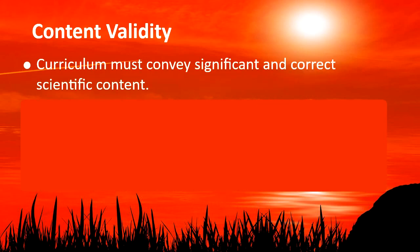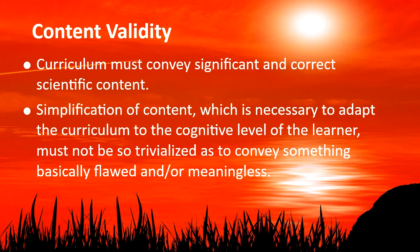The second is content validity. Whatever content you present in your class, at whatever level you are teaching, you should provide content that is significant and correct. Sometimes it is said we should simplify the content, but whenever we simplify or adapt the curriculum to the cognitive level of the learner, as science teachers it is our responsibility that we must not trivialize it to the point of conveying something basically flawed or meaningless. In the process of simplification, we should not do anything that is wrong or meaningless.